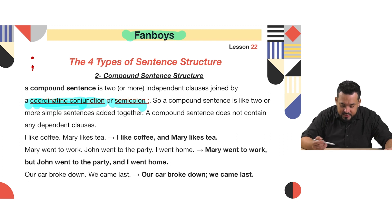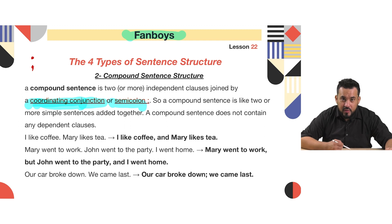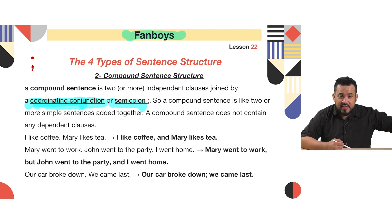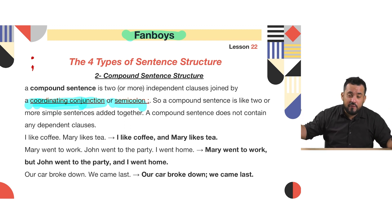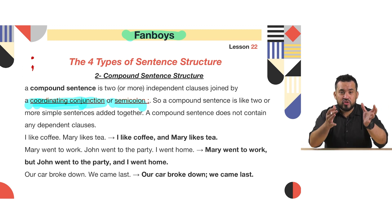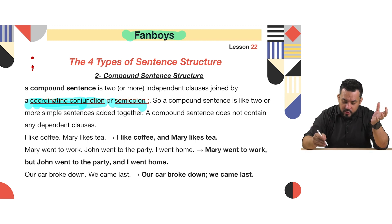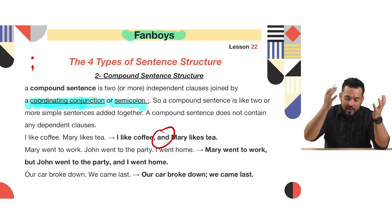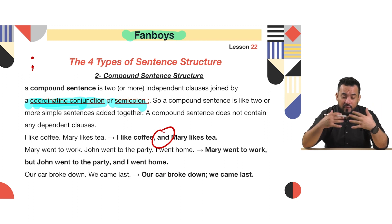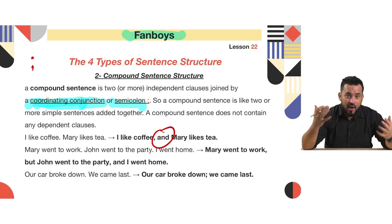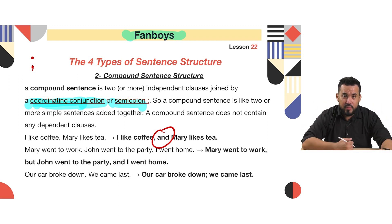For example: 'Marie likes tea' is a simple sentence. 'I like coffee' is another simple sentence. Now let's put those two together to make a compound sentence — we will use 'and': 'I like coffee and Marie likes tea.' So 'and' is a coordinating conjunction.